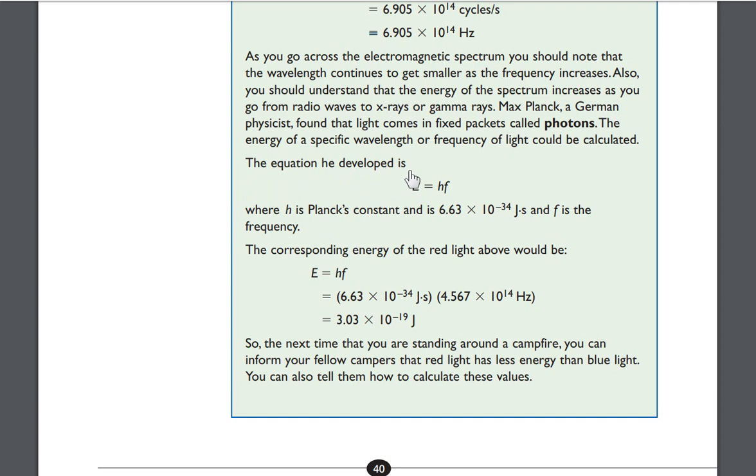The equation he developed is E equals HF, where H is Planck's constant and is 6.63 times 10 to the negative 34th joule seconds. And F is the frequency. So, if you ever want to know the energy of a wave, all you have to do is take its frequency and multiply that by H. Well, how are you going to figure out what H is? H is easy because it's always the same. It's a constant. And it's always 6.63. So, if you want to know the energy of a wave, just multiply its frequency by 6.63 times 10 to the negative 34th.